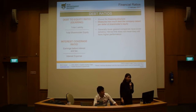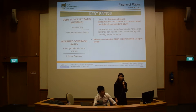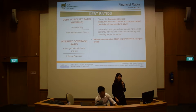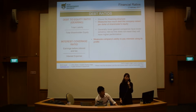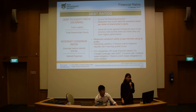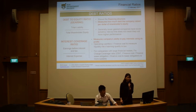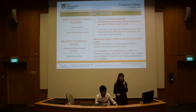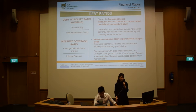So you should always be careful. The next one is the interest coverage ratio, which is EBIT — earnings before interest and tax — over interest expense. This measures a company's ability to pay interest using its profits, and operating cash flow over finance costs measures liquidity risk if earning quality is low. For companies with large financial leases, the fixed charge coverage ratio — EBIT plus finance cost and finance lease obligations over finance cost and lease obligations — is more suitable.